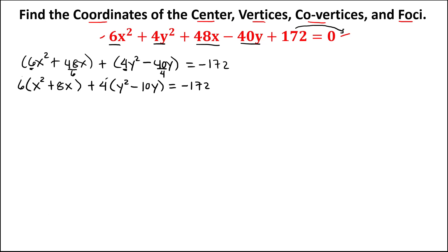Now we can do completing the square. For x, take 8, divide by 2 to get 4, then square it: 4² = 16. So the completing-the-square value for x is 16.